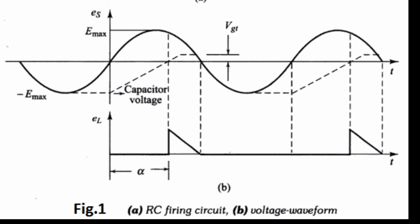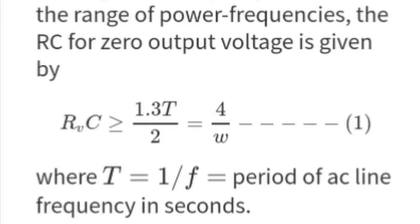In the range of power frequencies, the RC for zero output voltage is given by R1C ≥ 1.3T/2 = 4/ω, where T = 1/f = period of AC line frequency in seconds.